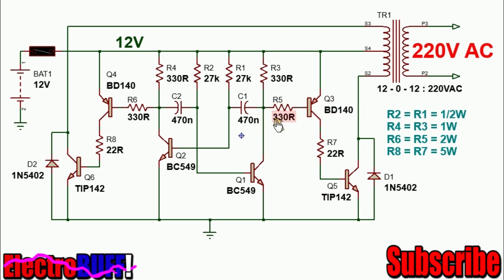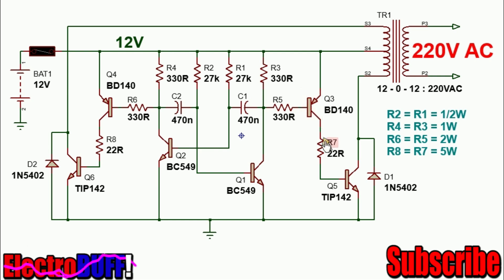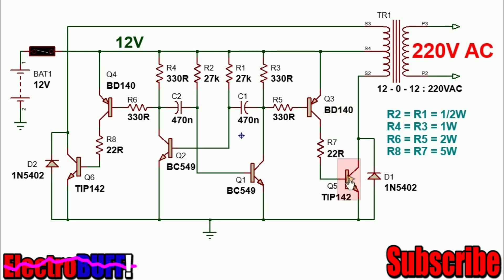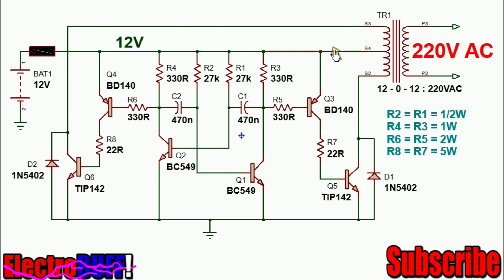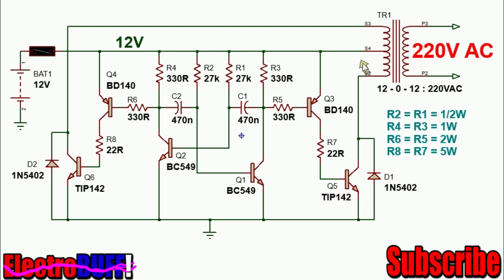Current flows out of the base of the BD140 transistor through the 300 ohm resistor. When this happens, because this is a PNP transistor, current will find a path from the 12 volt rail through the BD140 transistor, through R7, through the base of the TIP142 Q5. Q5 then conducts, allowing a much larger current to flow from the supply through winding S4-S2, through transistor Q5, into ground. This is the first half cycle.